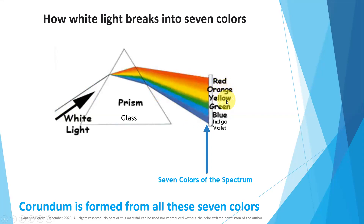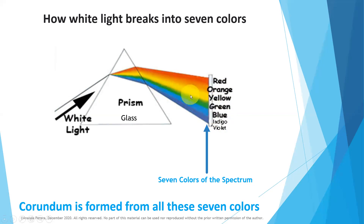Red, orange, yellow, green, blue, indigo, violet are the colors from top to bottom. These are the colors. When we place a white sheet here, we can get the colors on this paper. This is called rainbow colors.